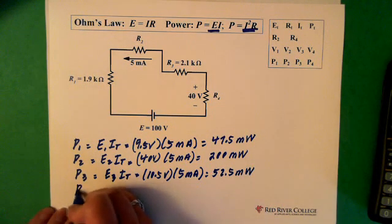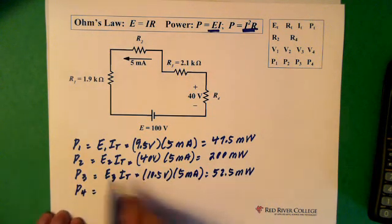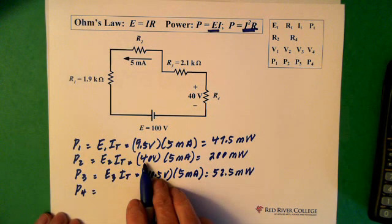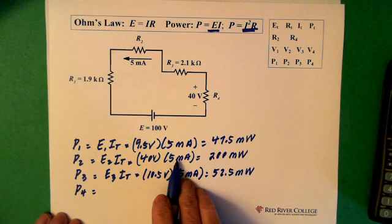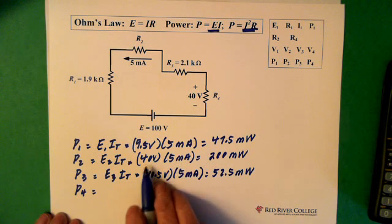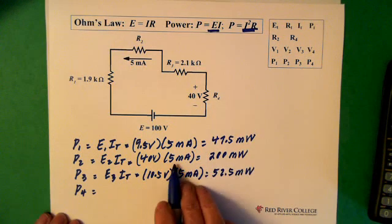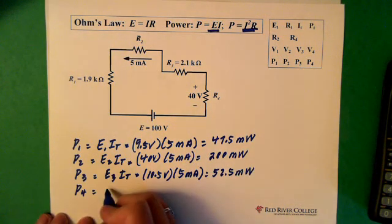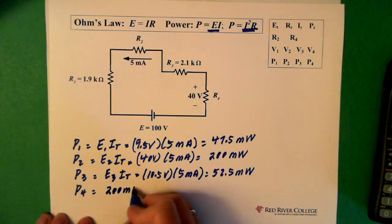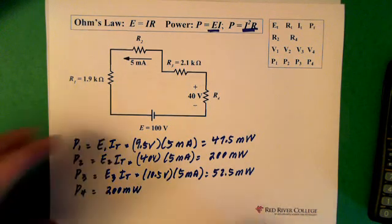And power 4 has got to be the same as power 2 because the voltage is the same and the current is the same. So we have 40 volts across resistor 4 and 5 milliamps. So then that is 200 milliwatts. Now let's add up our power.